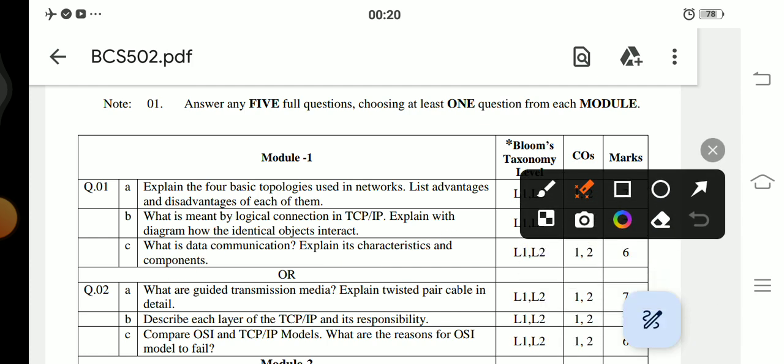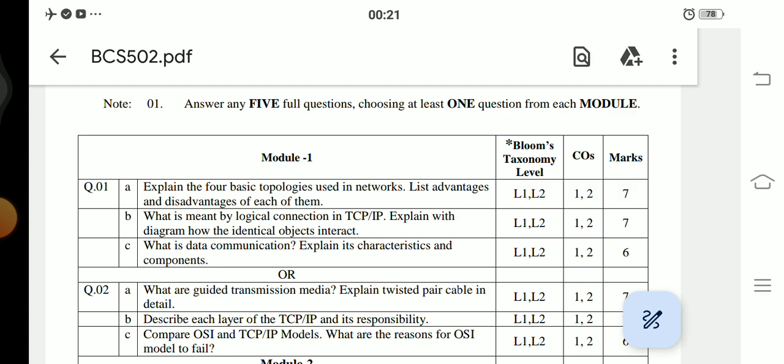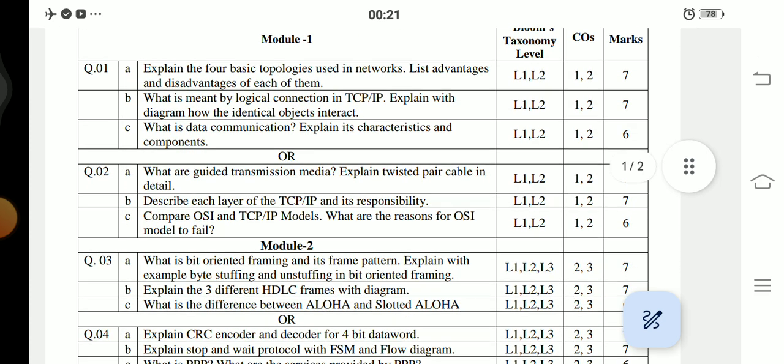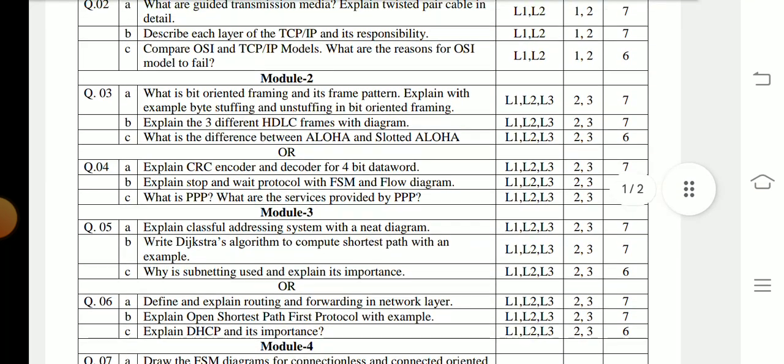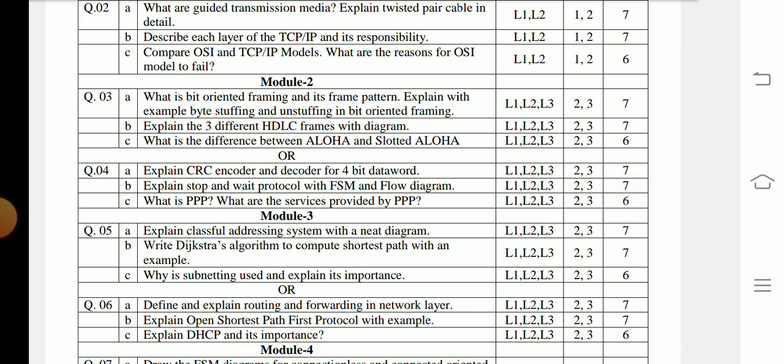Question number 2a: What are guided transmission media? Explain twisted pair cable in detail. 2b: Describe each layer of the TCP/IP and its responsibility. 2c: Compare the OSI and TCP/IP models. What are the reasons for OSI model to fail? Among these two questions, you have to answer anyone. You can expect around 60 percent of the same questions in your semester end exam.